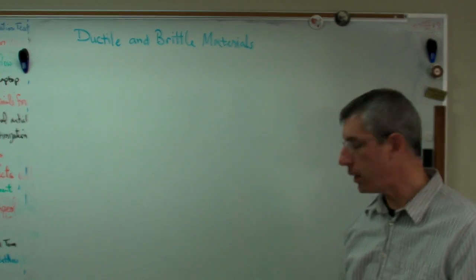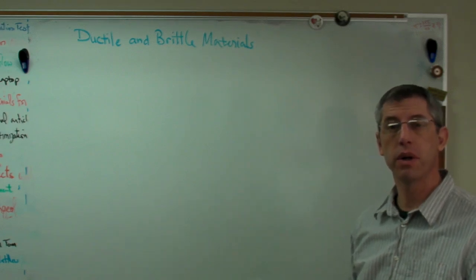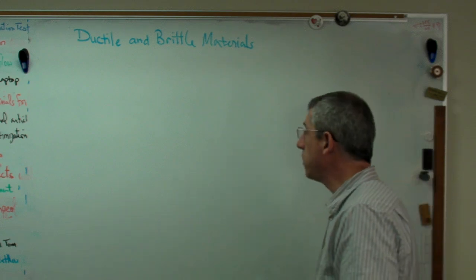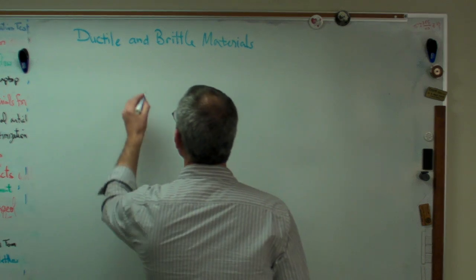Now we can talk about it in kind of imprecise terms like this. There's a much more precise way to describe ductile and brittle materials and that's to use a stress-strain curve. So let's draw one of those.